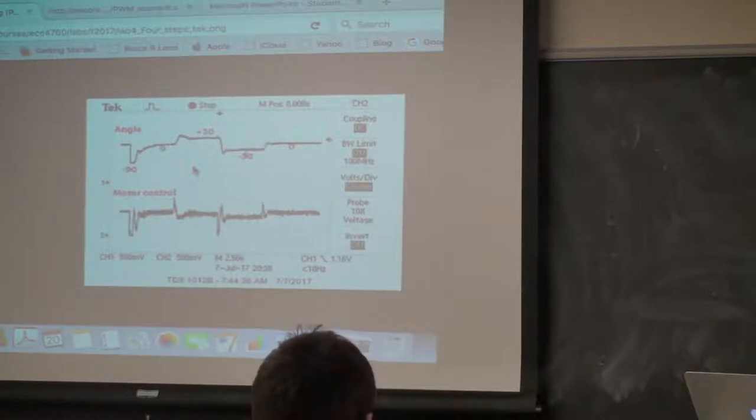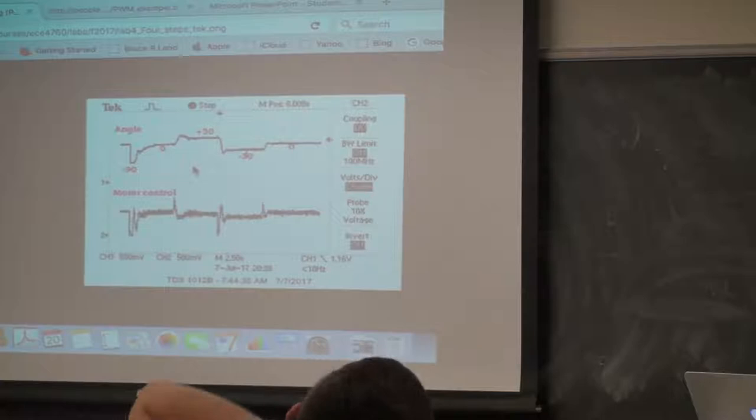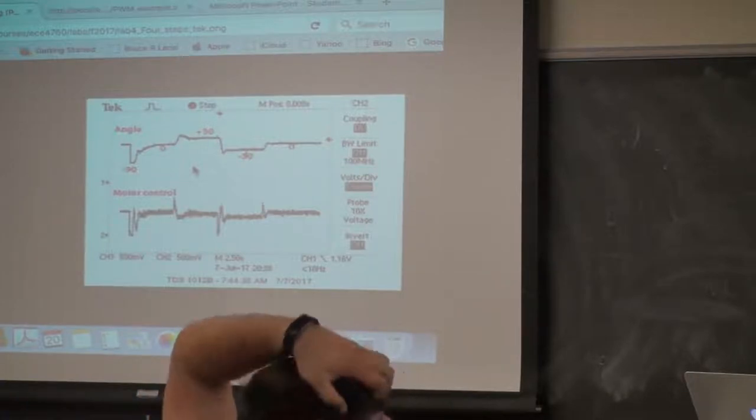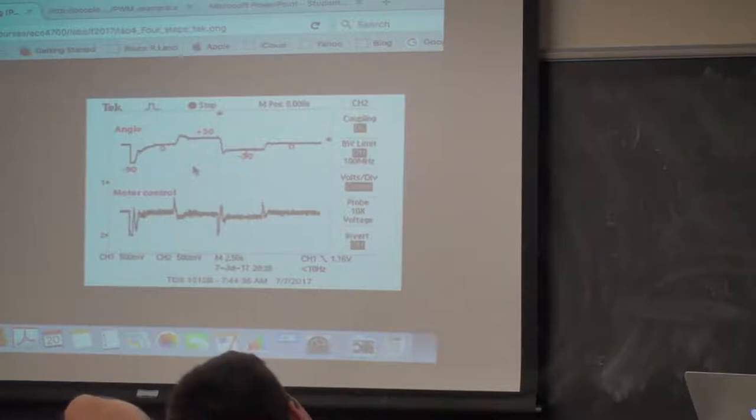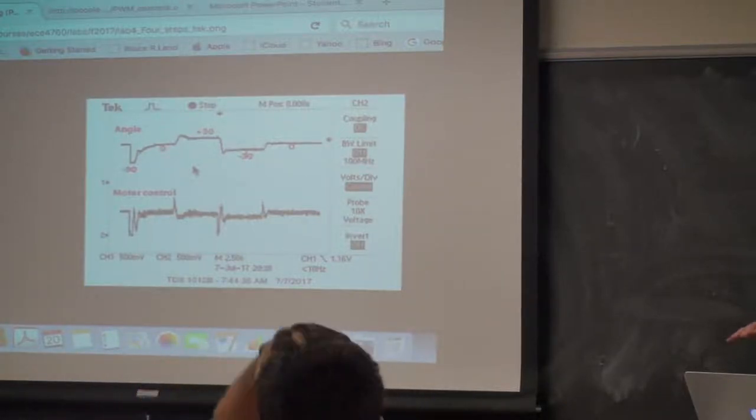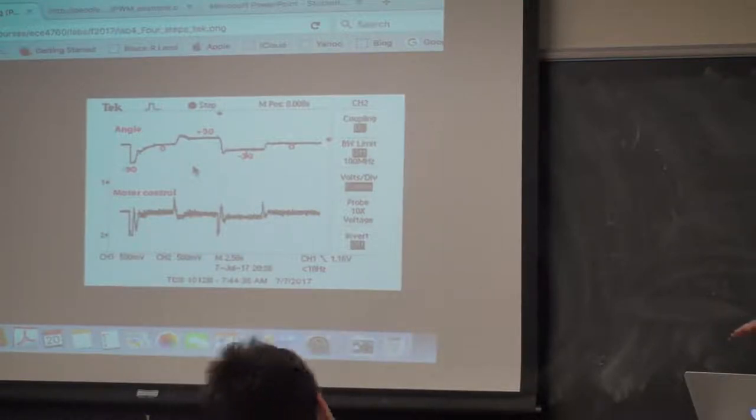Having the wires for the potentiometer near the wires for the sensor... sorry, for the motor... having the sensor wires and the potentiometer near the wires for the motor can destroy your potentiometer reading. So if the motor wires are laying over the top of the wires that go from the sensor, you may have it so corrupted by spike noise from the motor that it's unusable for control. So geometry actually matters in this lab.